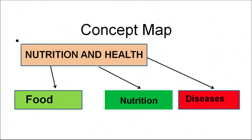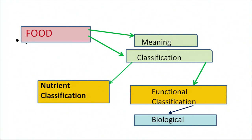There are three major concepts into which this chapter has been divided. The first concept is Food, Nutrition and Disease. In the subtopic of food, we have to cover the following headings: the meaning of food, its classification on the basis of nutrients present in it, and the functional classification — that is, the biological functions which food performs in our body.